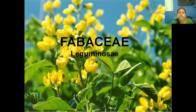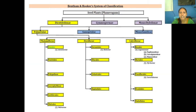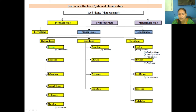Fabaceae, whose older name is Leguminosae, comes under Dicotylidae, subclass Polypetalae, and the order is Rosales. Under Rosales, the family is Leguminosae. Leguminosae has three subfamilies: Papilionoideae, Caesalpinioideae, and Mimosoideae. The code for this is PCM — you should remember Papilionoideae, Caesalpinioideae, and Mimosoideae.